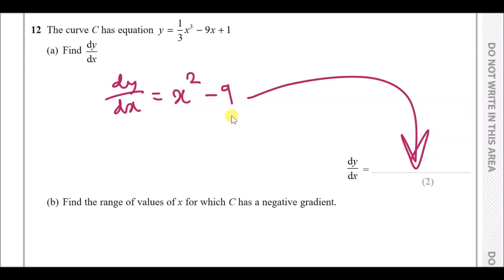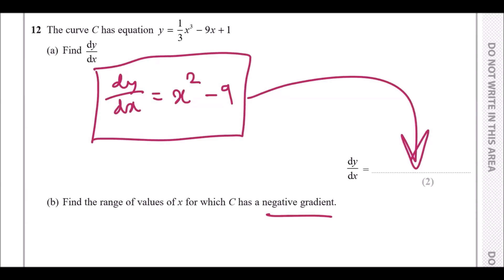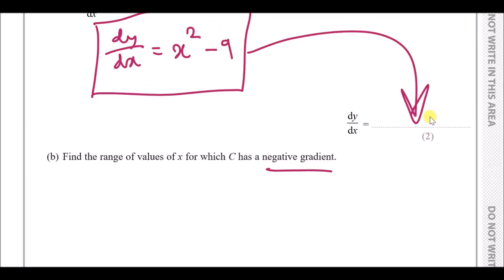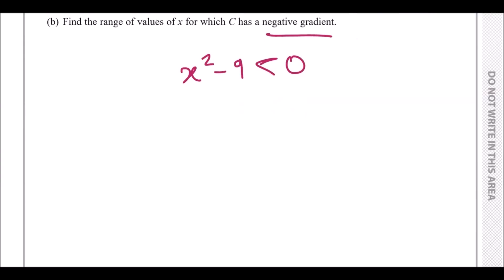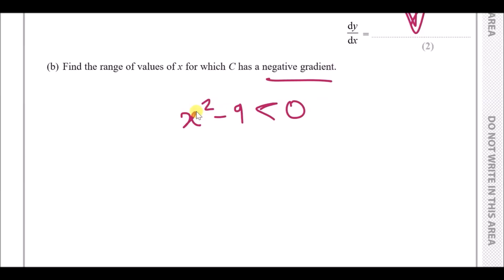Now part b: find the range of values of x for which C has a negative gradient. When the gradient expression is negative, you have to set x squared minus 9 less than 0. We need to find the values of x which make this expression less than 0.